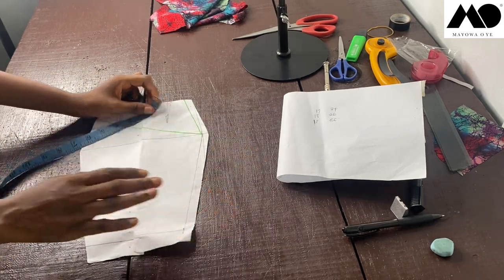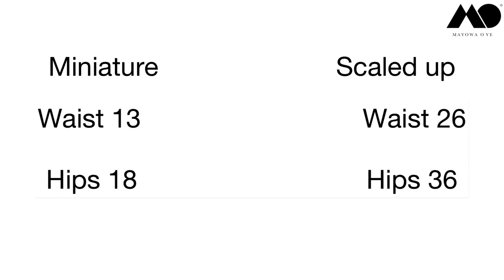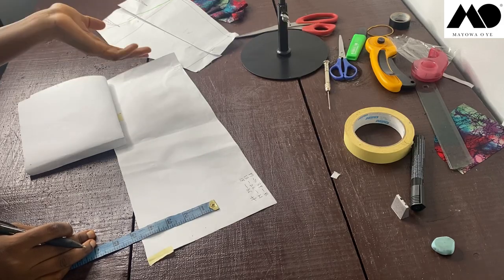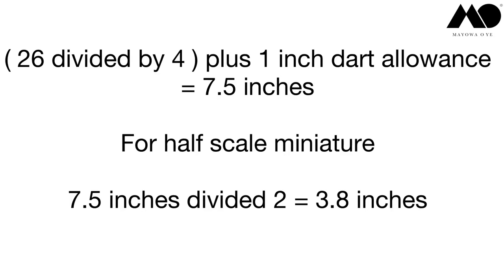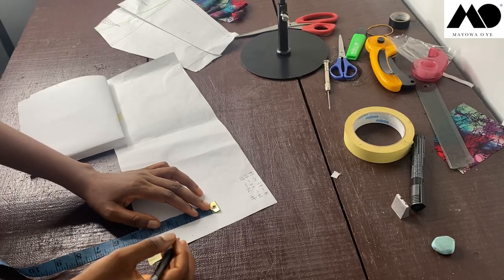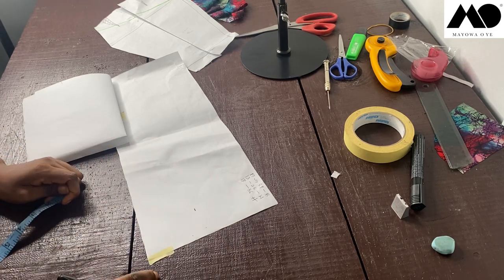To draft a waist measurement on a half scale pattern, take the scaled-up waist measurement. We measured 13 inches on the half scale and multiplied by two to get 26 inches. For an adult size six, take 26, divide by four, and add one inch allowance — that gives 7.5 inches. Then divide 7.5 by two to get the miniature measurement: 3.8 inches, which you mark on your pattern.